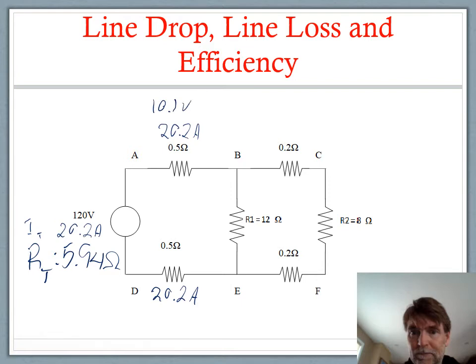If we started with 120 volts and we lose 10.1 at each of the two wires, we have 120 volts minus 20.2, which leaves us with 99.8 volts. 99.8 volts divided by that 12 ohms tells us there's 8.3 amps flowing through there.